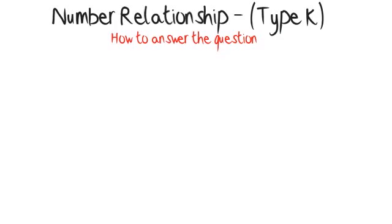If you think that to get the middle number you multiply the numbers on the outside, then check that this also works for the second group. If the multiplication rule works for the first group of numbers and the second group of numbers, you have found the right rule and can now find the missing number in the third group.